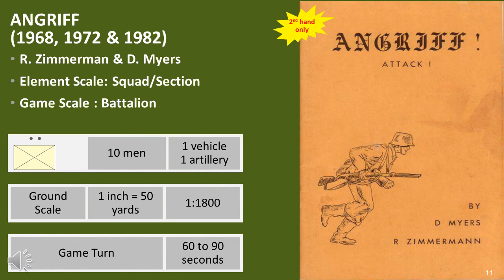Ungriff may have been the first set of modern micro-armour rules ever published, first published in 1968 and later revised in 1972 and 1982 by R. Zimmerman and D. Myers. The sequence of play was a major innovation, attempting to duplicate simultaneous movement into a sequential sequence of play. As with many early rules, there was a major focus on gun specification and armour thickness. These rules were designed for HO scale.